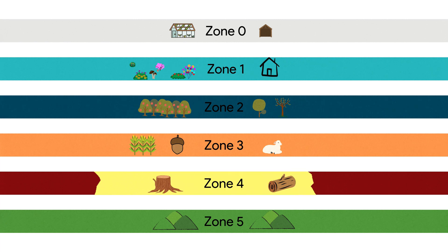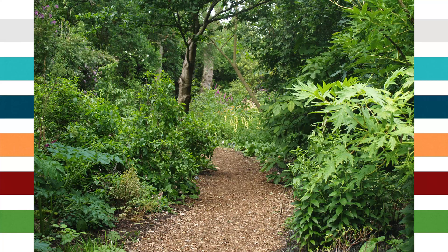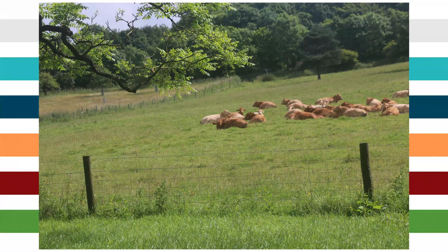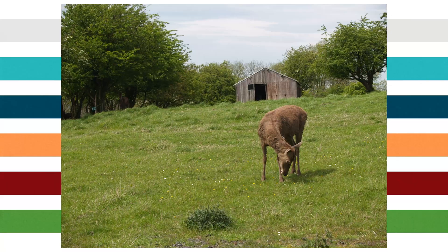Zone 4 is a longer-term development. It has trees and will eventually resemble woodland. The species planted here are harvested on a sustainable basis, and larger animals such as cattle, deer, and pigs can be kept at low stocking rates.